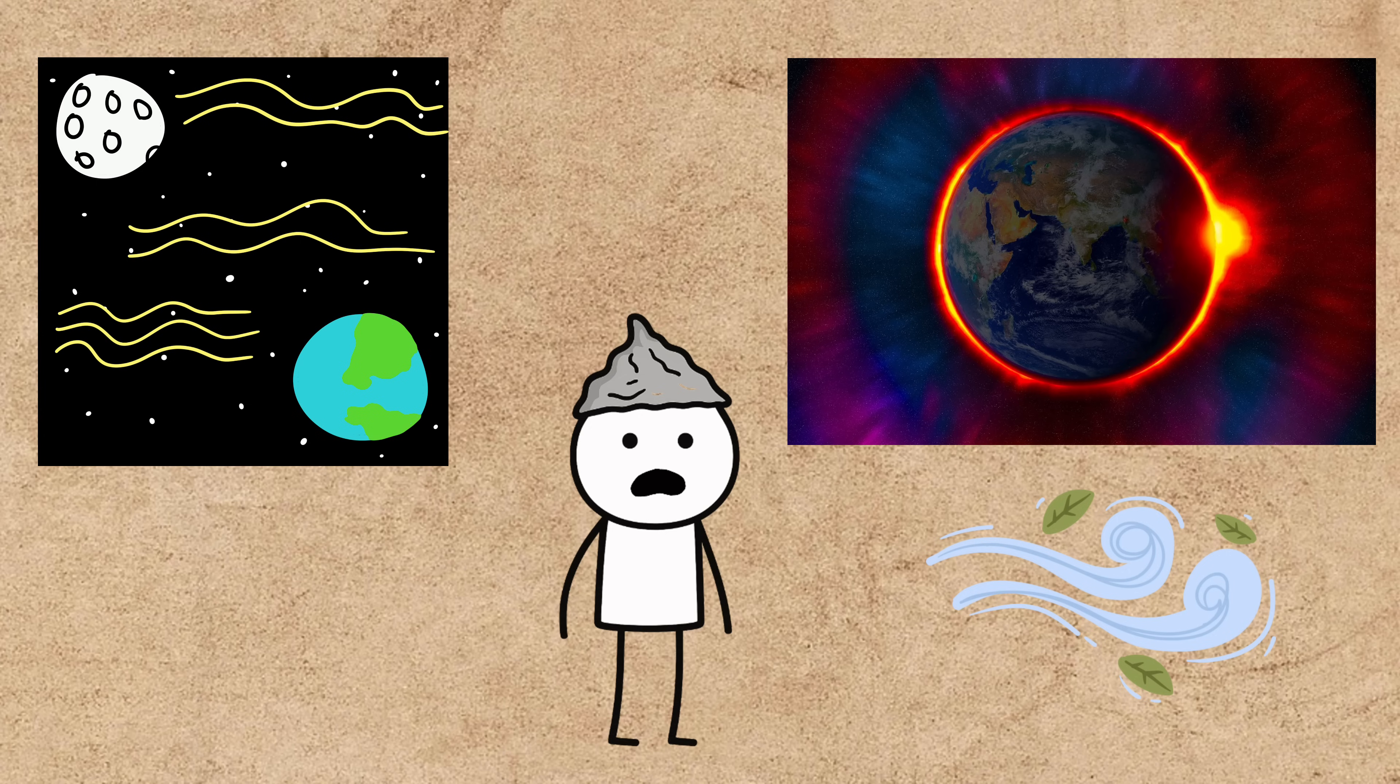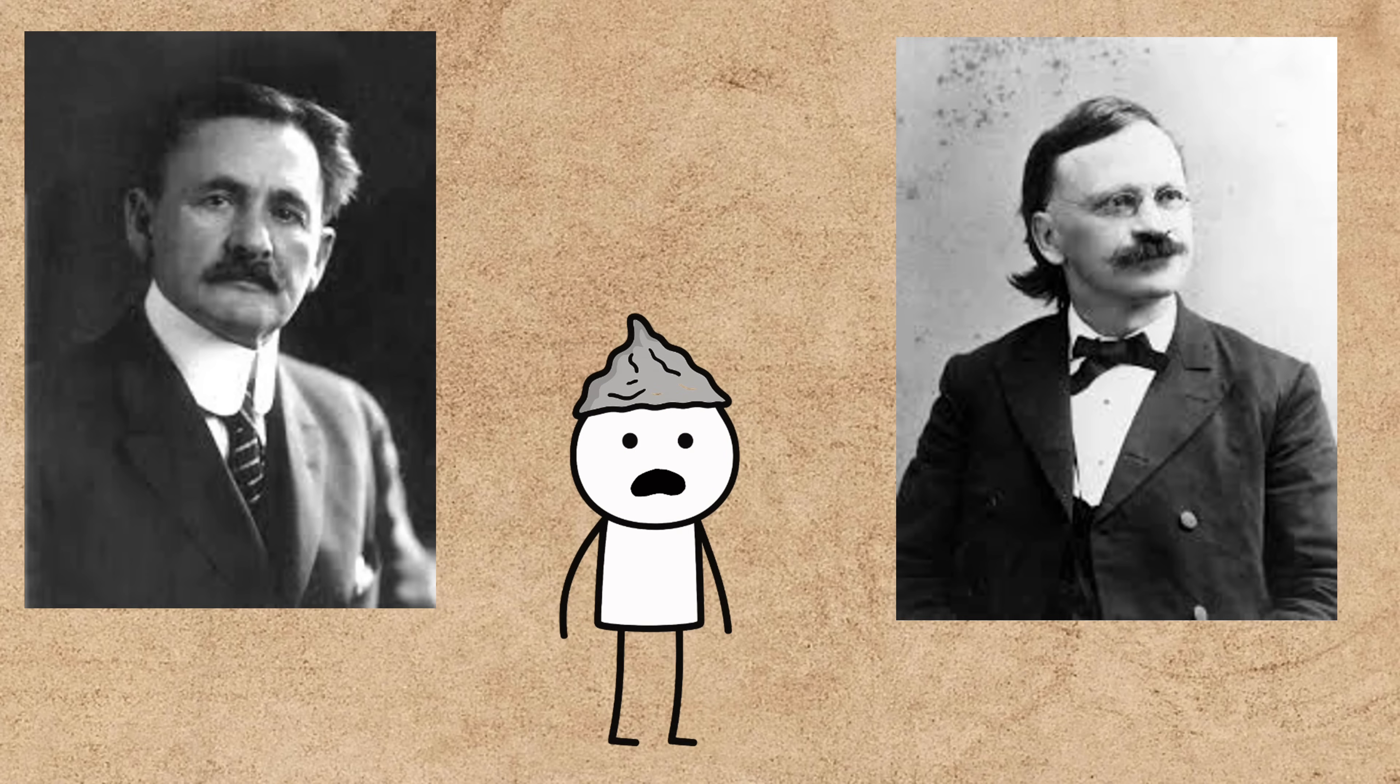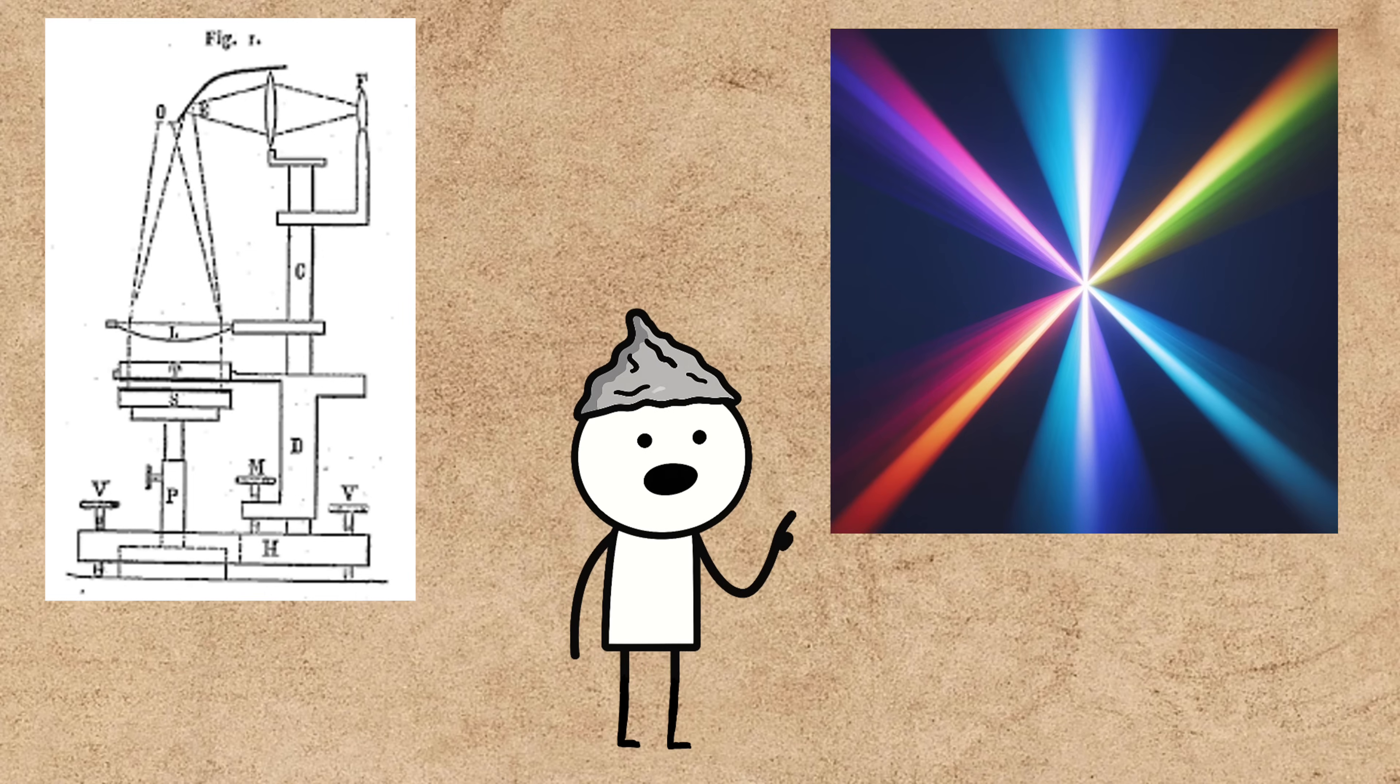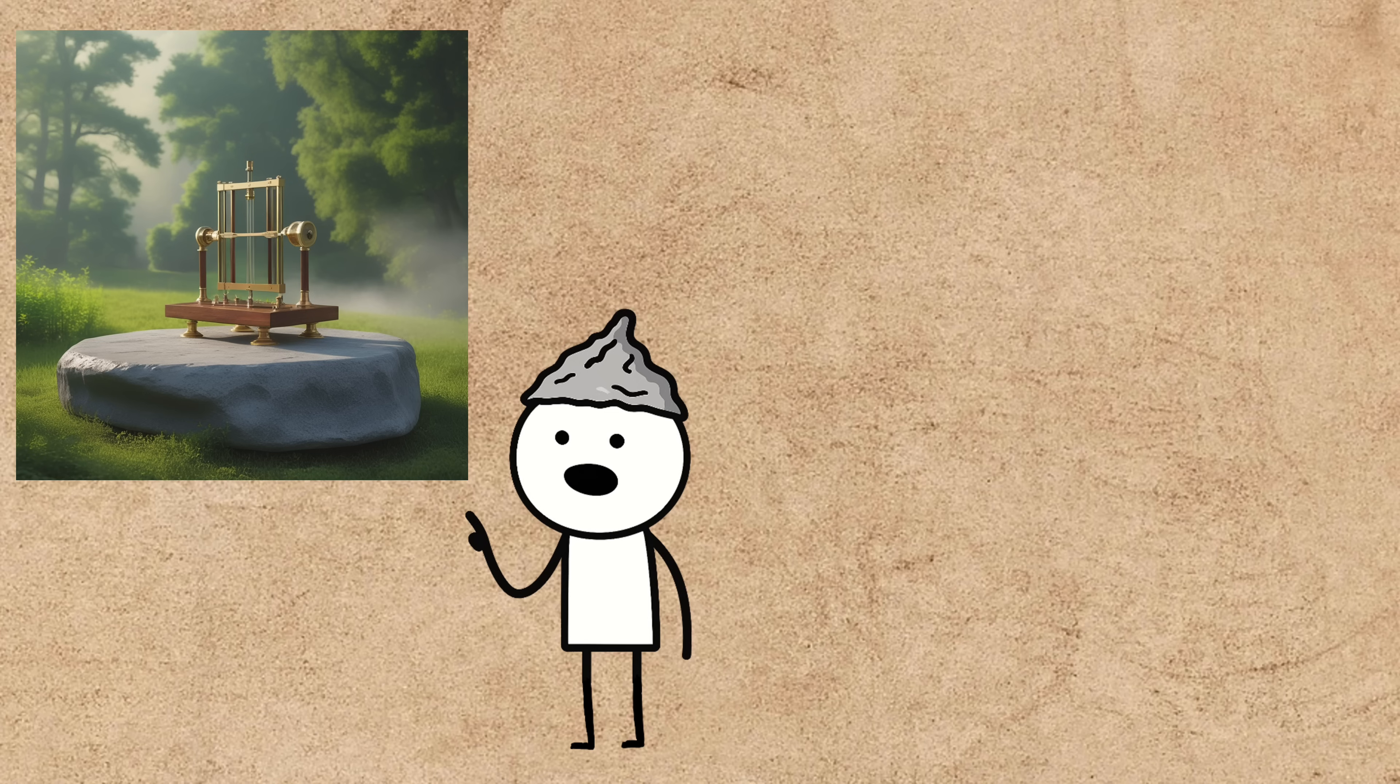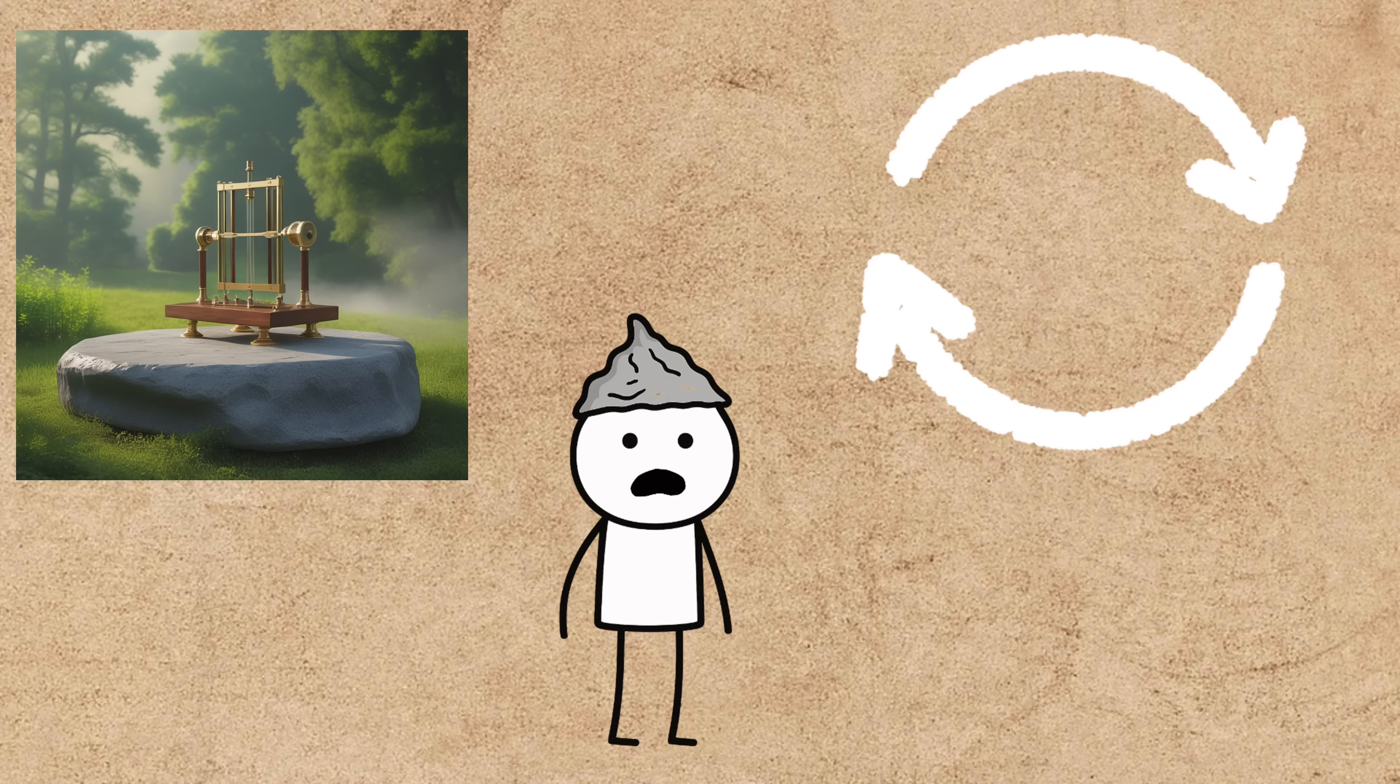In 1887, two American physicists, Albert Michelson and Edward Morley, set out to detect this wind. They built an ingenious device called an interferometer that split a beam of light, sent the two halves in different directions, and then recombined them. If the ether wind was real, it should slow down one of the light beams, creating a specific pattern. They set their experiment up on a massive stone slab floating in mercury to stop any vibrations. They ran it over and over at all times of day in different seasons. The result was always the same. Nothing.